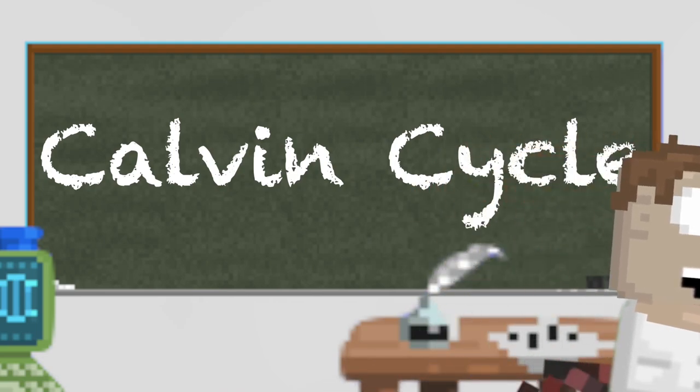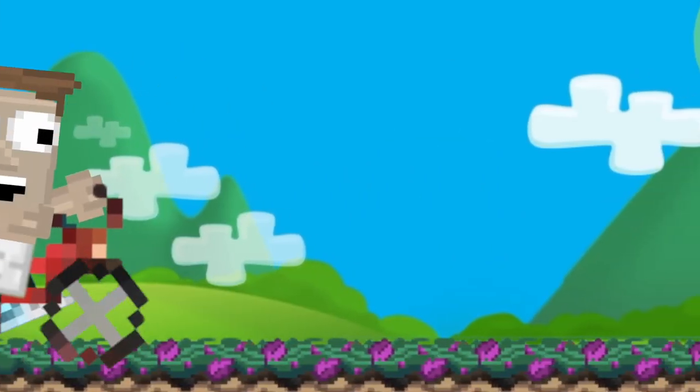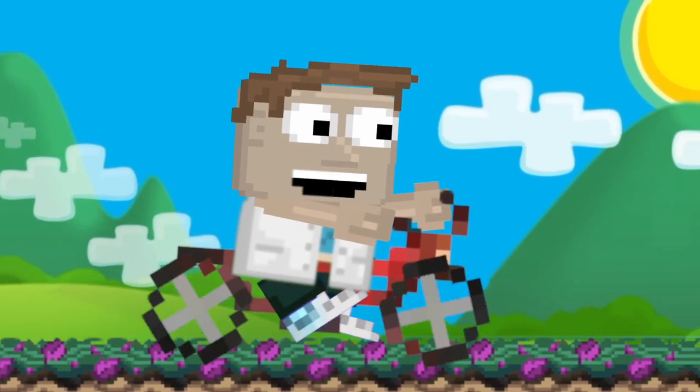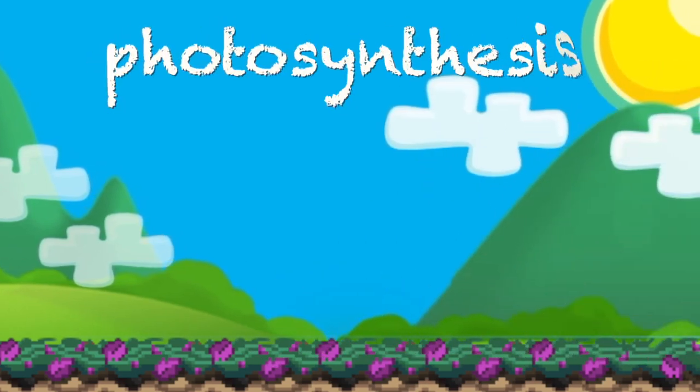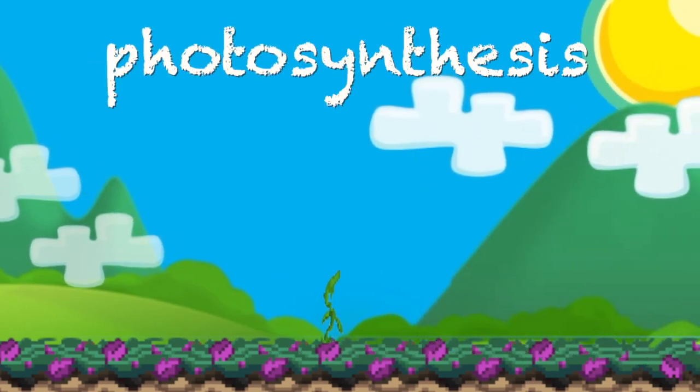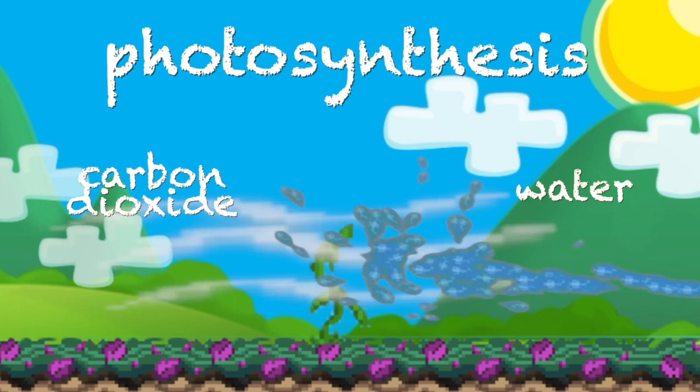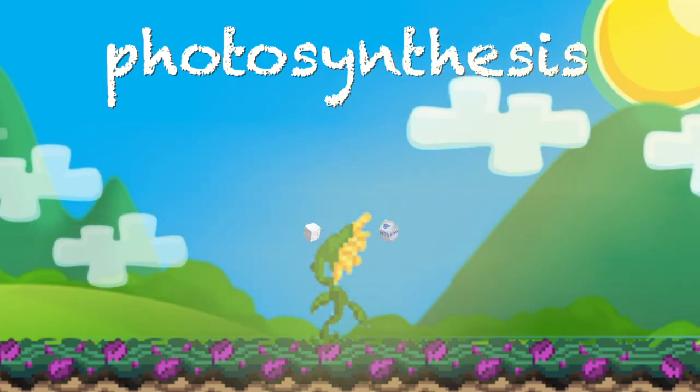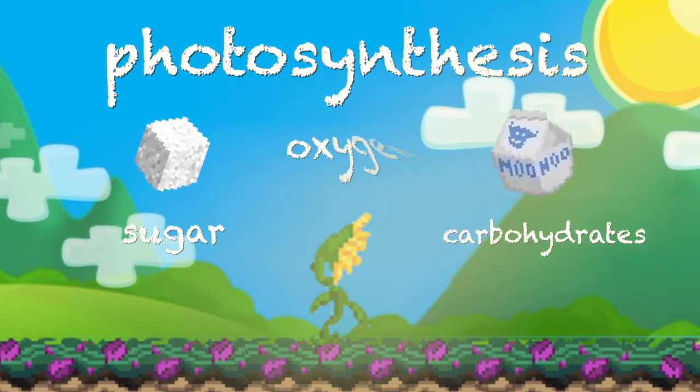Before we get into the Calvin Cycle, let's first do a short recap about what the overall process is. The overall process is photosynthesis. This is the nourishing process of most plants in which they take in carbon dioxide and water with the help of light energy to make them into sugar or carbohydrates and oxygen.